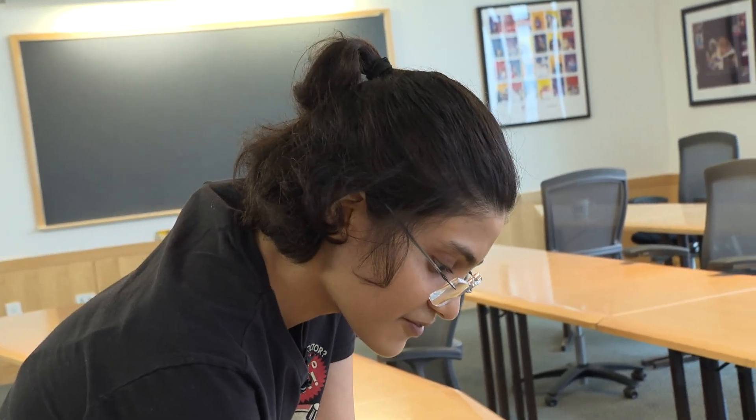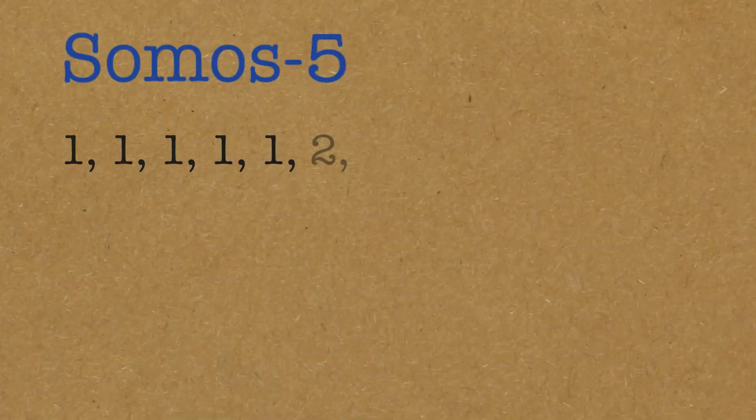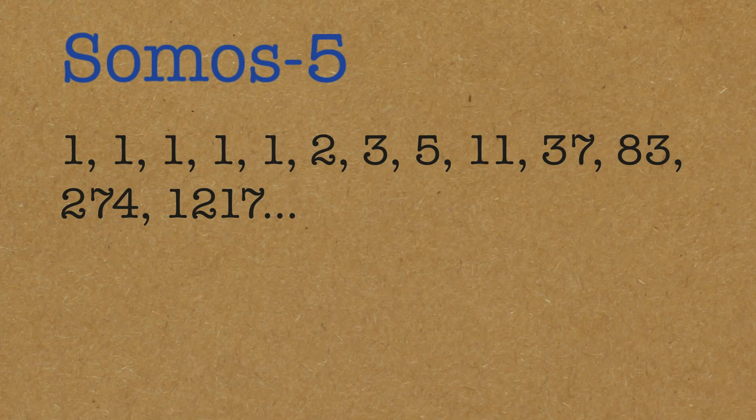Now I'll introduce you to another non-trivial thing. You have Somos 5 — you just start with 5 ones. If it's Somos 4, it starts from 4 ones; if it's Somos 5, you start from 5 ones. This is very important because if you don't start with all ones, you do get a fraction — but then it's not really the magic of these sequences. So if you want the magic, stick to the rule. You'll get 2, 3, 5, 11, 37, 83, 274, 1217, and it goes on — always integers.